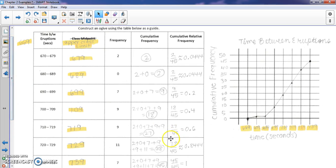The last cumulative frequency should always be the total number of observations that we have. So remember that we had 45, a total of 45 eruptions that we're looking at. So that's what my last cumulative frequency is.